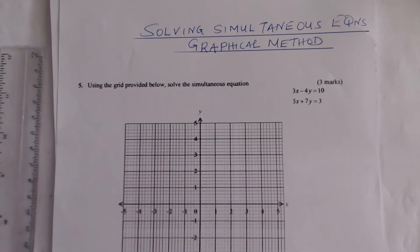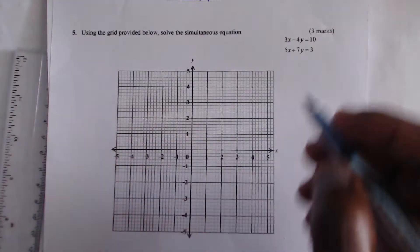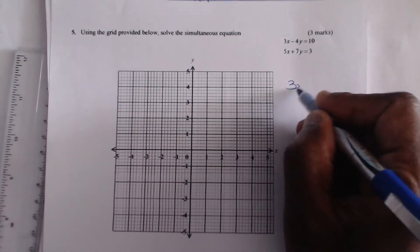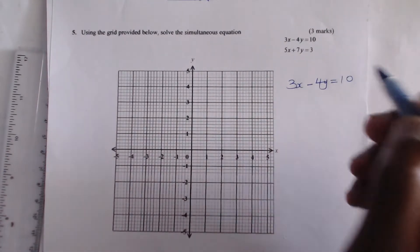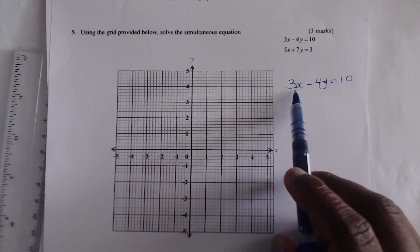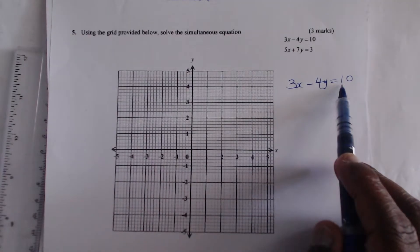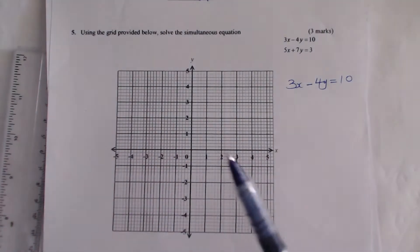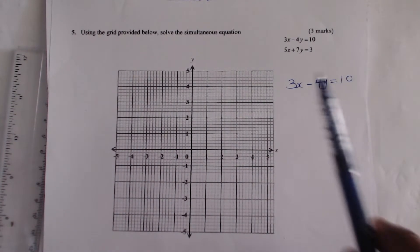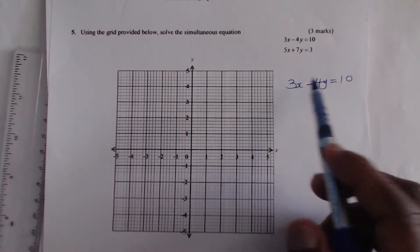So this is how we solve the simultaneous equations graphically. We shall take each equation at a time. The first one is 3x minus 4y is equals to 10. As you notice, this is an equation of a straight line. So you shall draw a straight line using this equation and also using the other equation. Then you draw the two lines. Where the lines intersect, you read that point and give it in terms of coordinates. That will give you the solution. So we shall begin by drawing the first line.